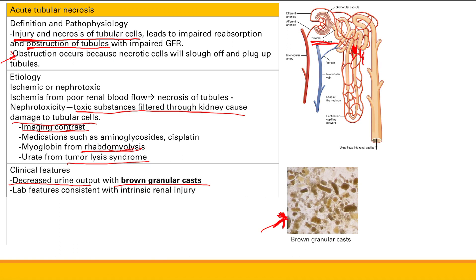This is what it looks like — if you see this picture, your answer is acute tubular necrosis. Lab features are consistent with intrinsic renal injury. Reabsorption is impaired, so urine osmolarity goes down because water can't be reabsorbed and stays in the urine, making it very dilute. Urine sodium and fractional excretion of sodium are increased because you're not reabsorbing. Your serum BUN-to-creatinine ratio goes down because you're not reabsorbing BUN.